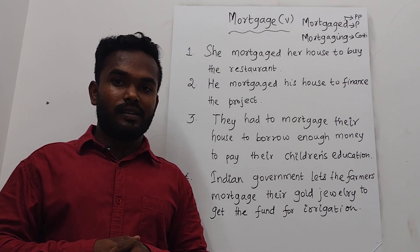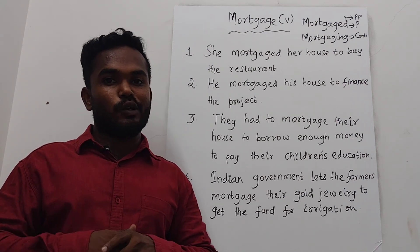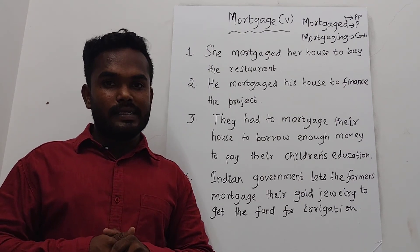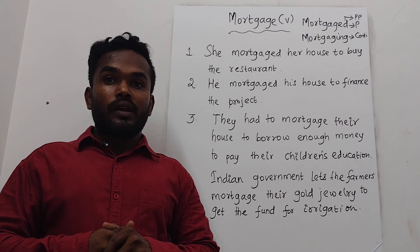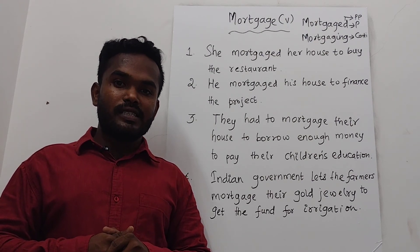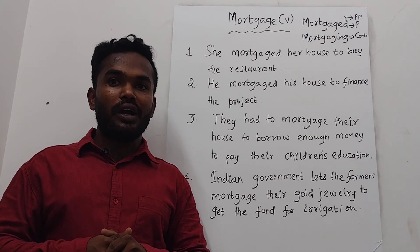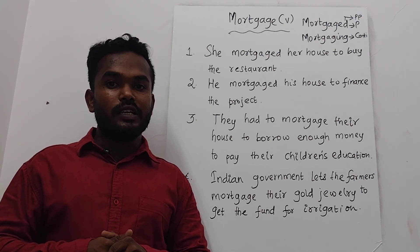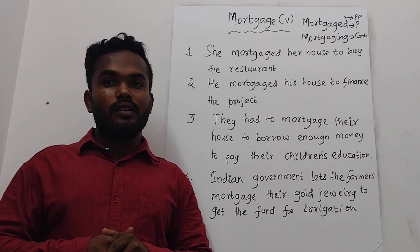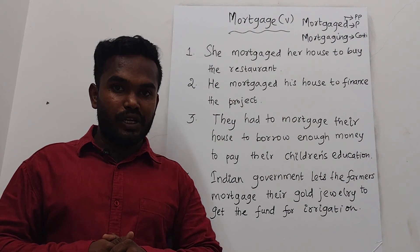The final sentence is: the Indian government lets the farmers mortgage their jewellery to get the fund for irrigation.